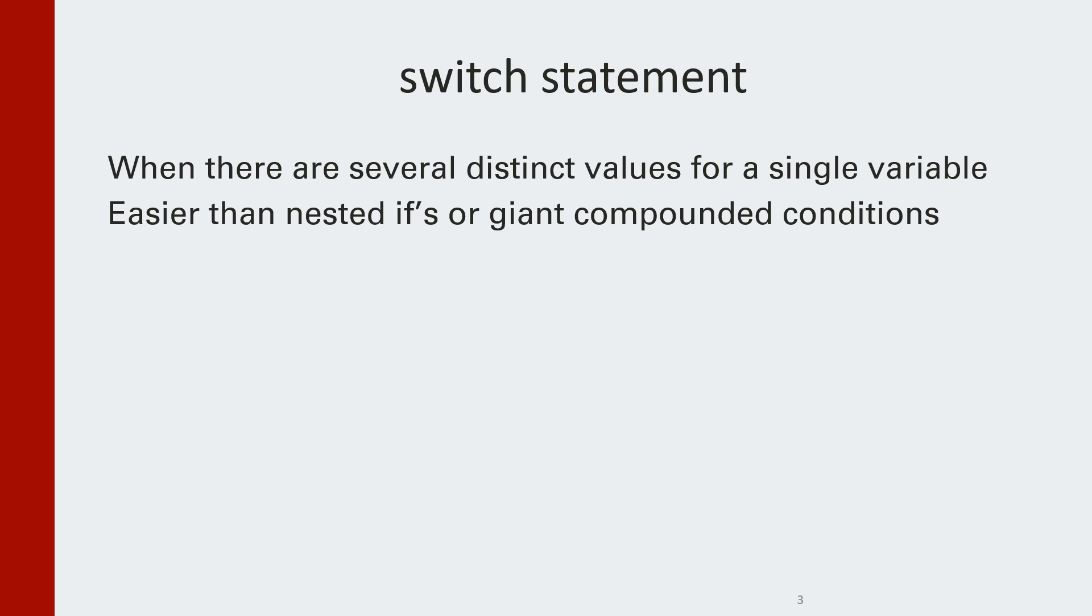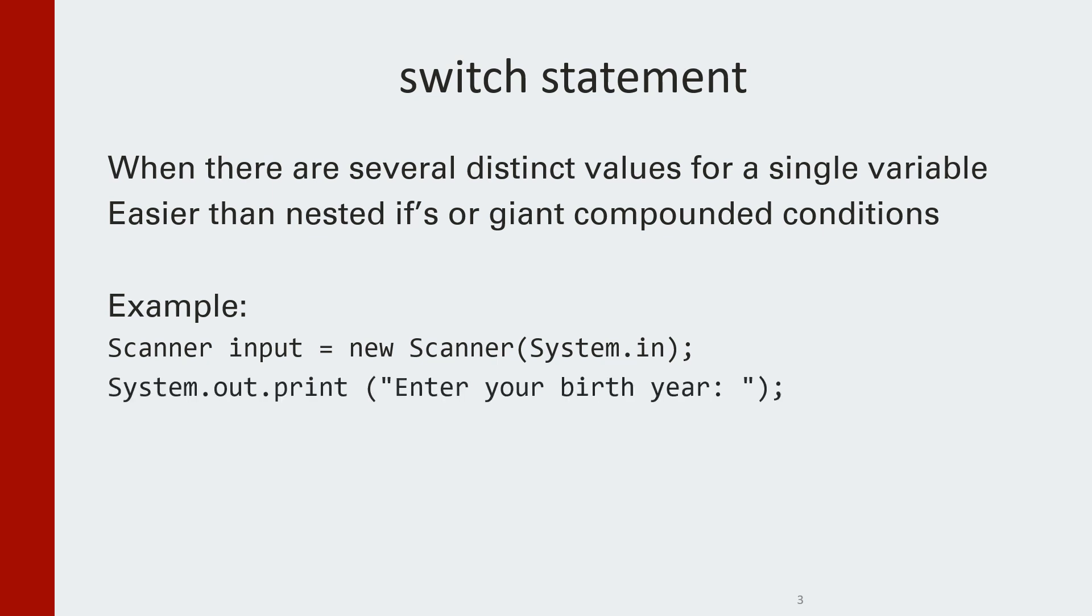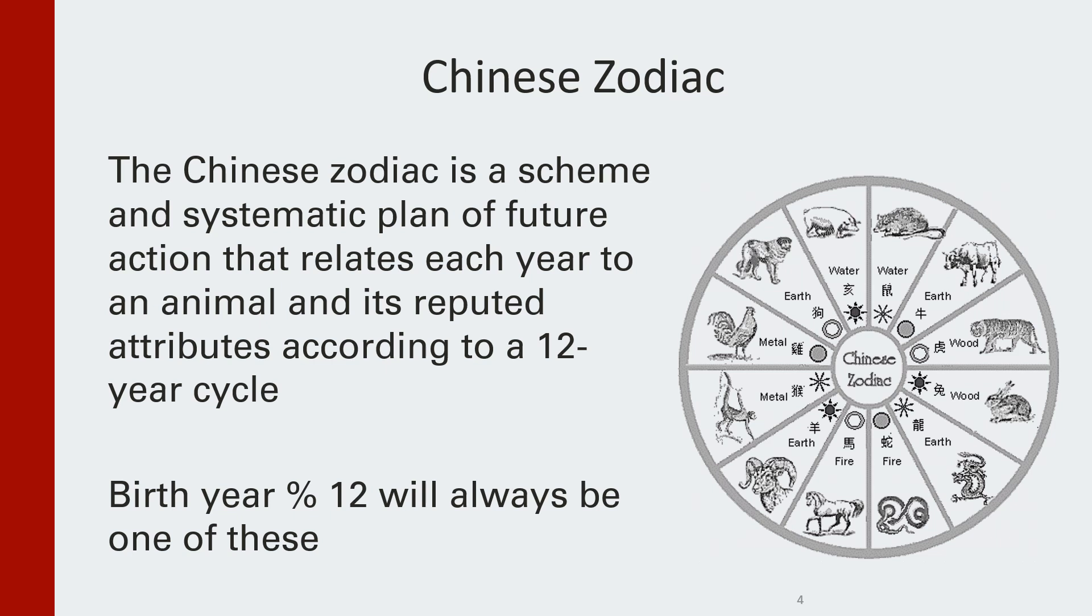Let me illustrate via an example. Let's suppose that we have a user input their birth year, which I'm going to save as an int, int year. Now what I'm going to do is I'm going to tell the user which animal they are associated to in the Chinese zodiac. If you are not familiar, the Chinese zodiac breaks up each year according to a 12-year cycle. The birth year that you have mod 12 will be associated to one of those elements in the cycle, which is an animal.